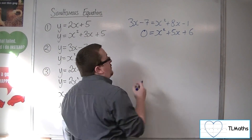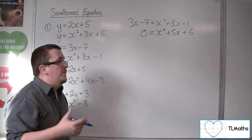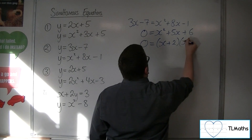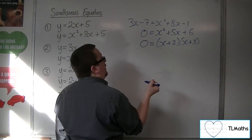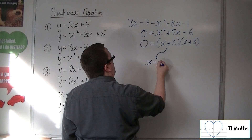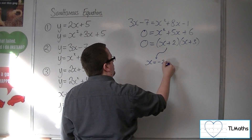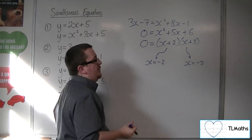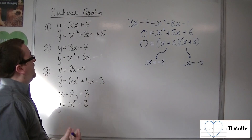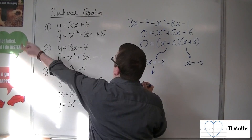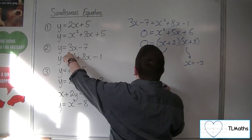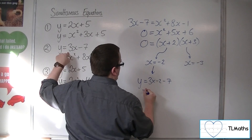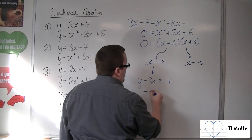If you can spot that it can be factorised, then factorise it — this one can. So it factorises to (x plus 2)(x plus 3). So either x equals minus 2, or x equals minus 3, in order for those brackets to be zero. If x equals minus 2, substituting into the first equation: y equals 3 lots of minus 2, take away 7 — so minus 6 take away 7 is minus 13.